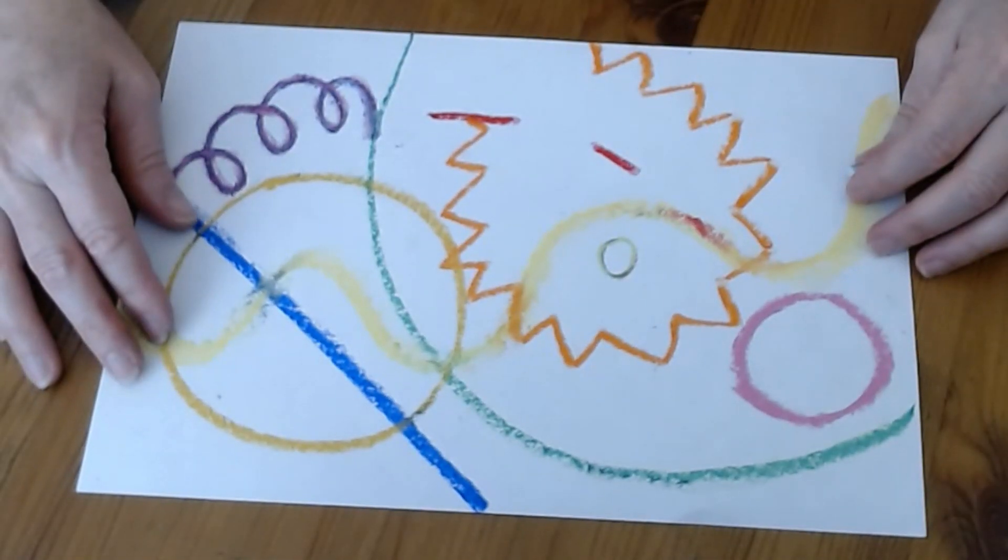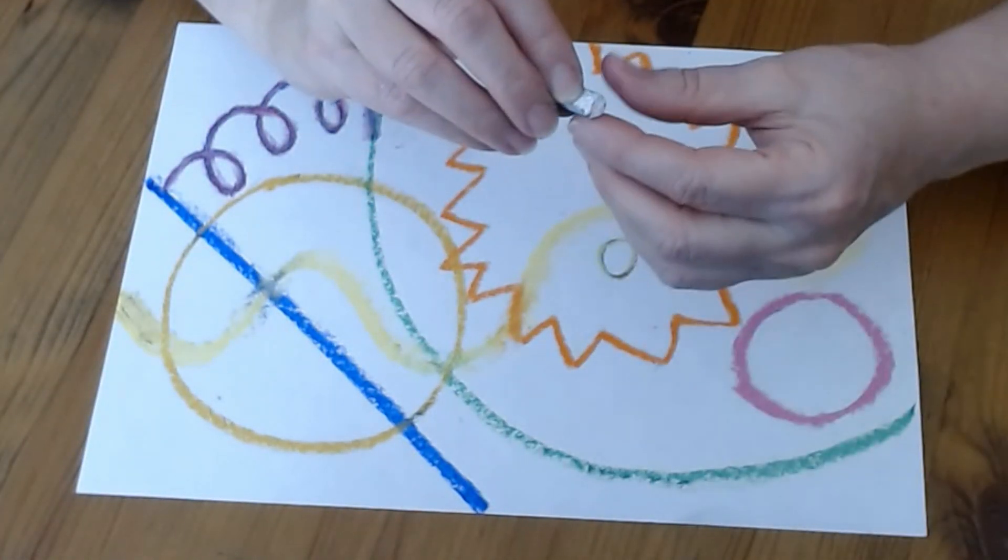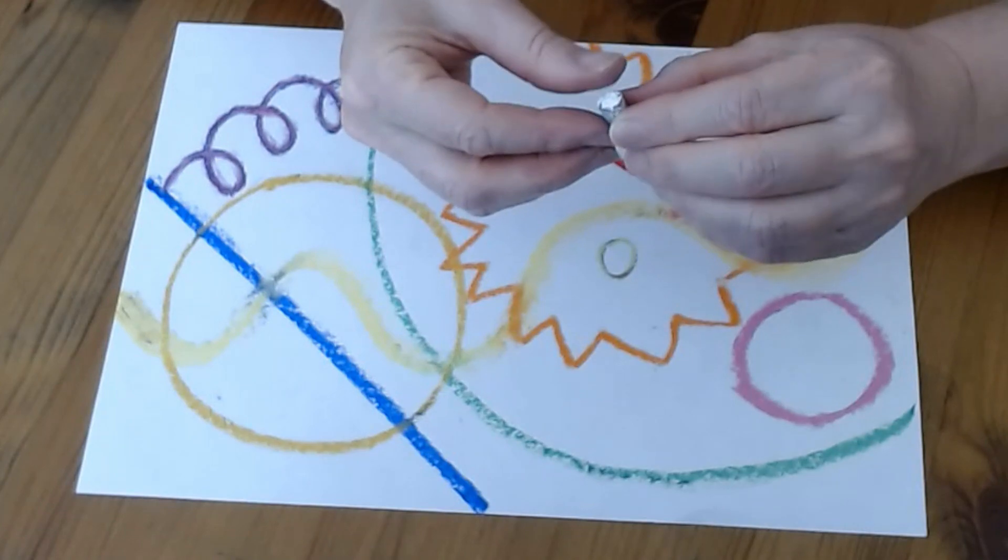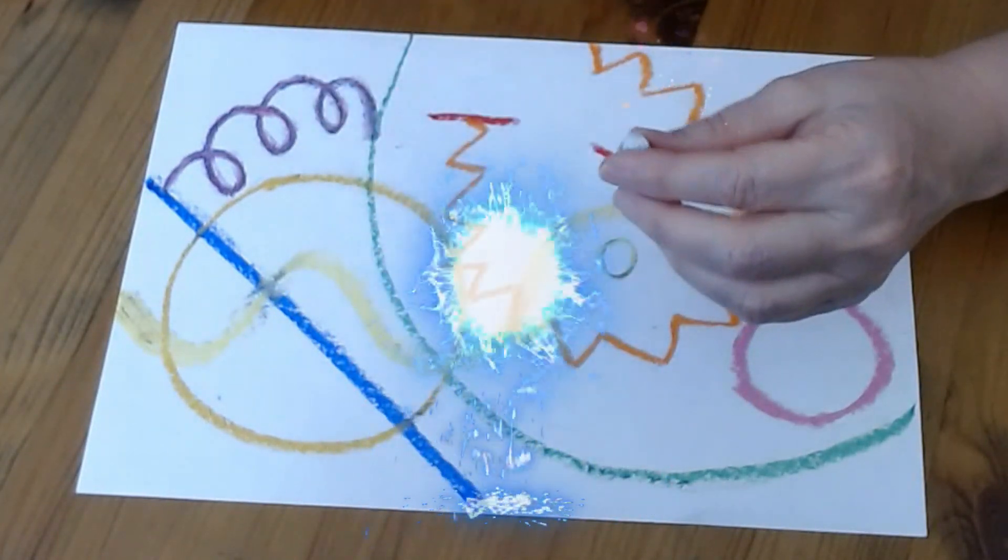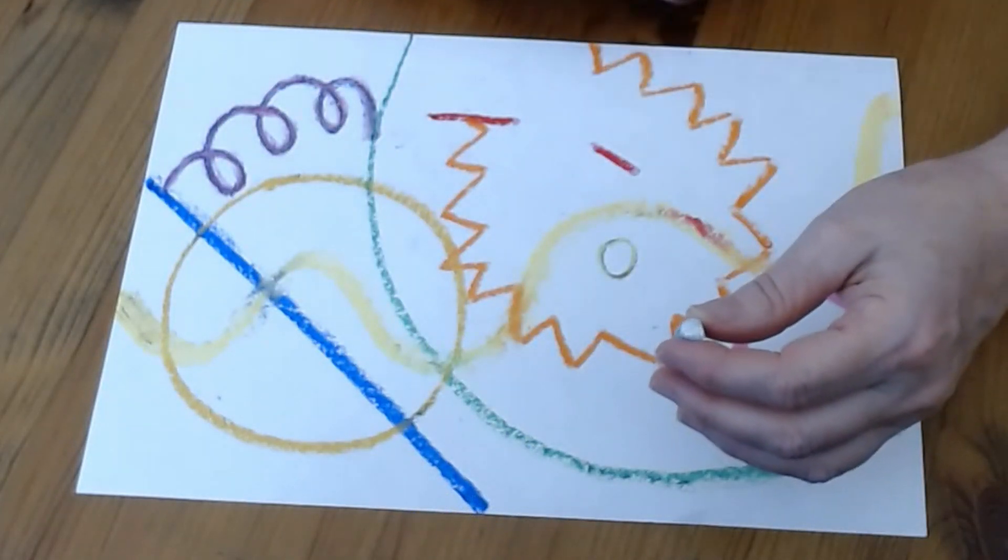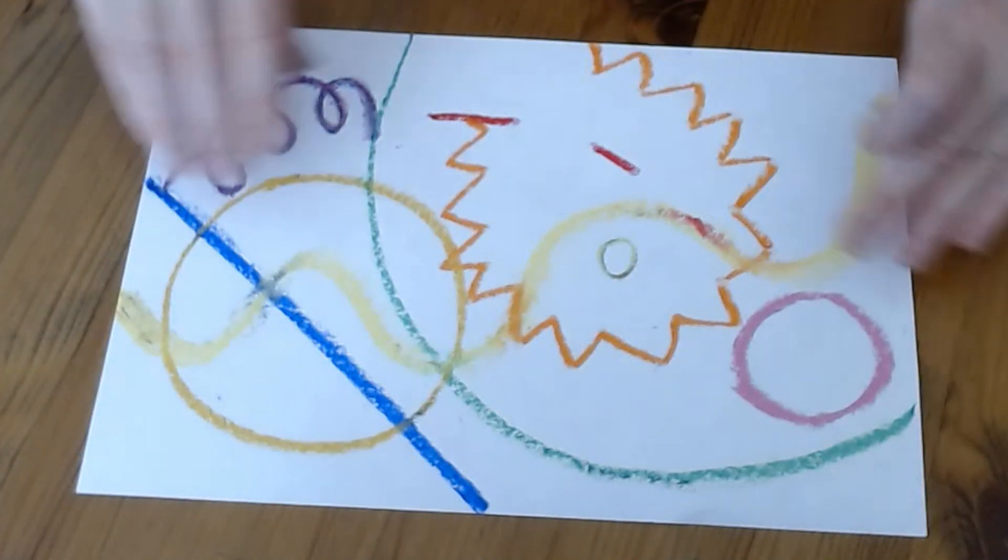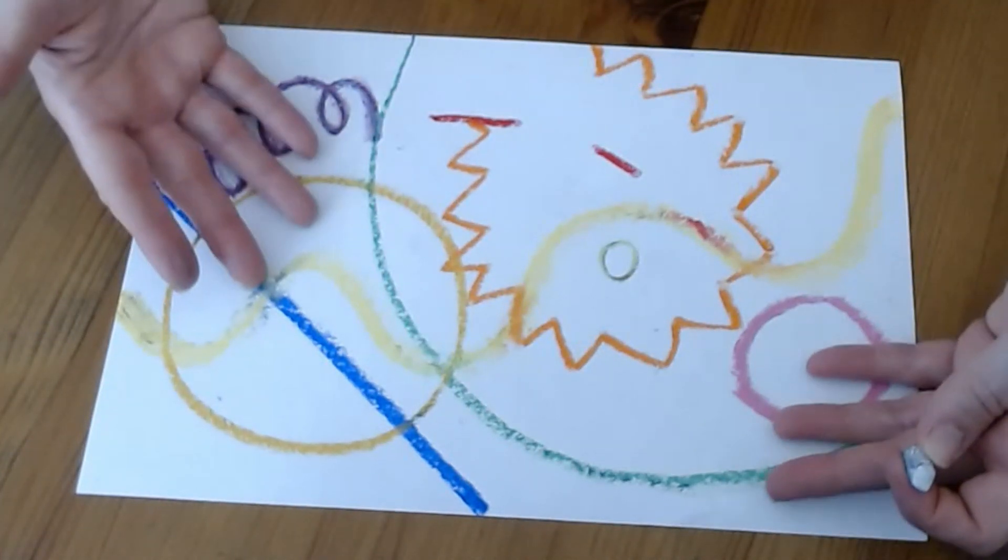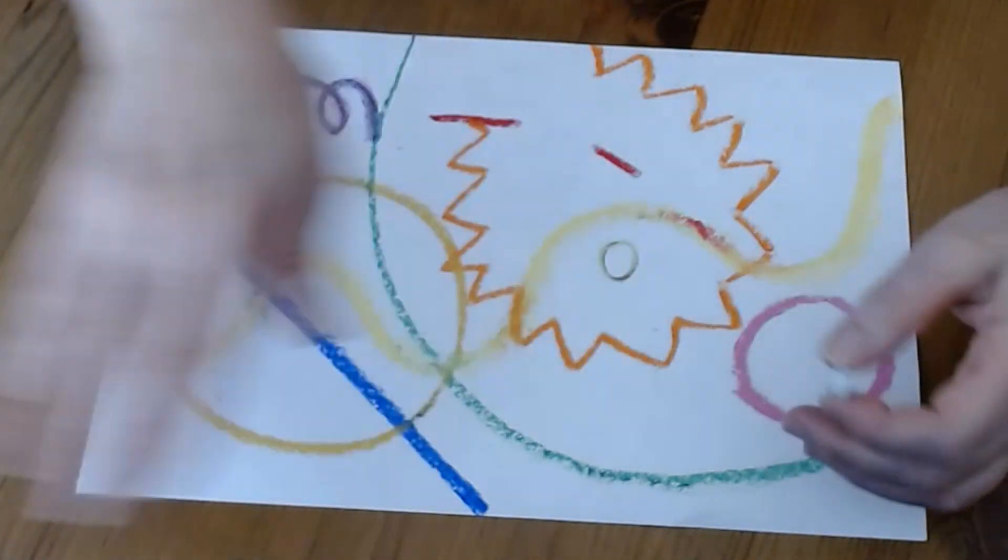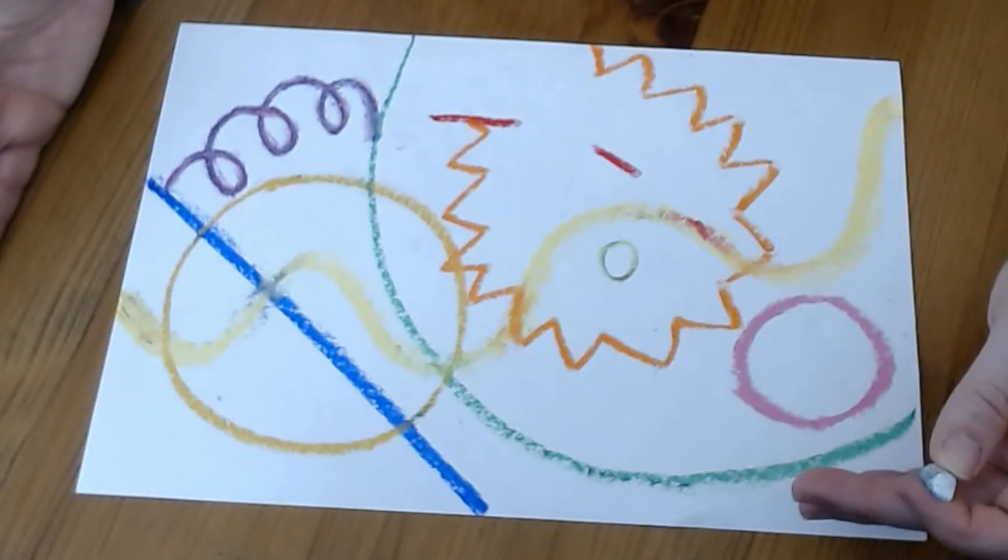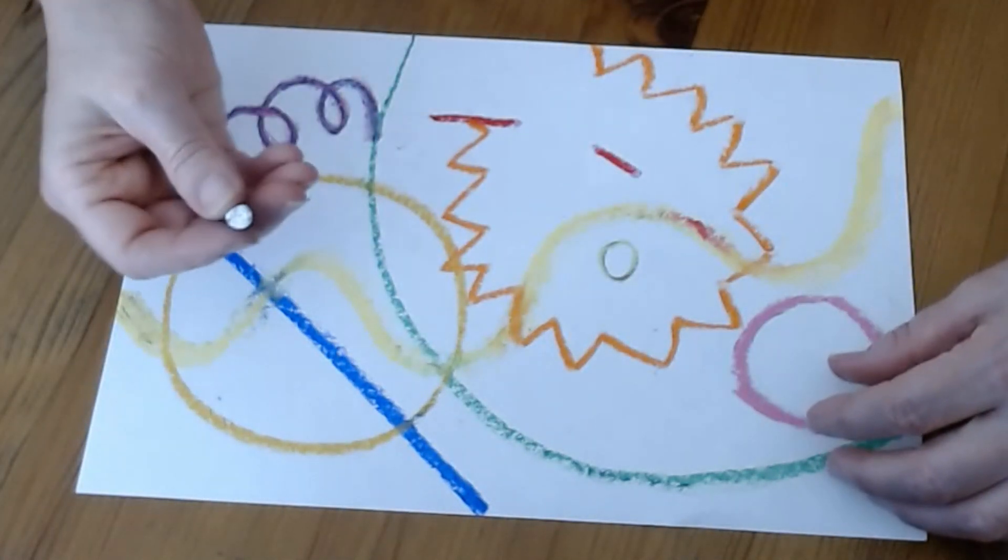First thing we're going to do is add some white because something magical happens when you paint watercolor all over oil pastel. The oil pastel pushes its way up from the water so that you can see the oil pastel and the watercolor together. The watercolor doesn't just cover it all up. Even though we're going to cover it up, we're gonna paint right on top of our oil pastel.